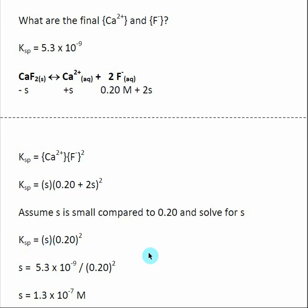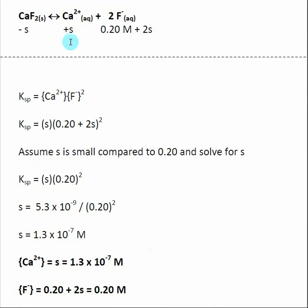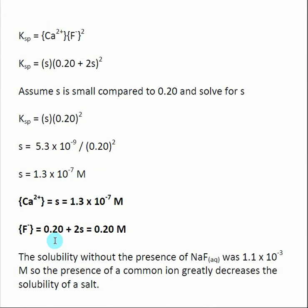Solving for S — the solubility — I plug in the Ksp value, divide, and get S = 1.3 × 10⁻⁷ M. Since [Ca²⁺] = S, the concentration of Ca²⁺ is 1.3 × 10⁻⁷ M. For F⁻, we do produce 2S additional fluoride, but 2S is negligible compared to 0.2 M, so we already assumed S is small. Therefore, [F⁻] remains essentially unchanged at 0.2 M.